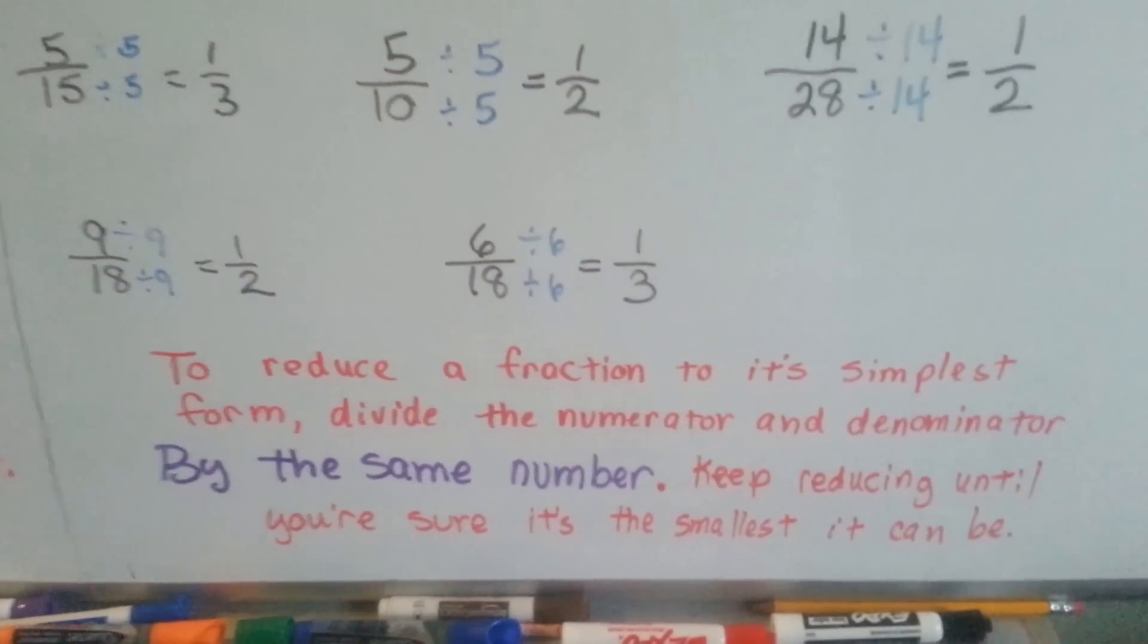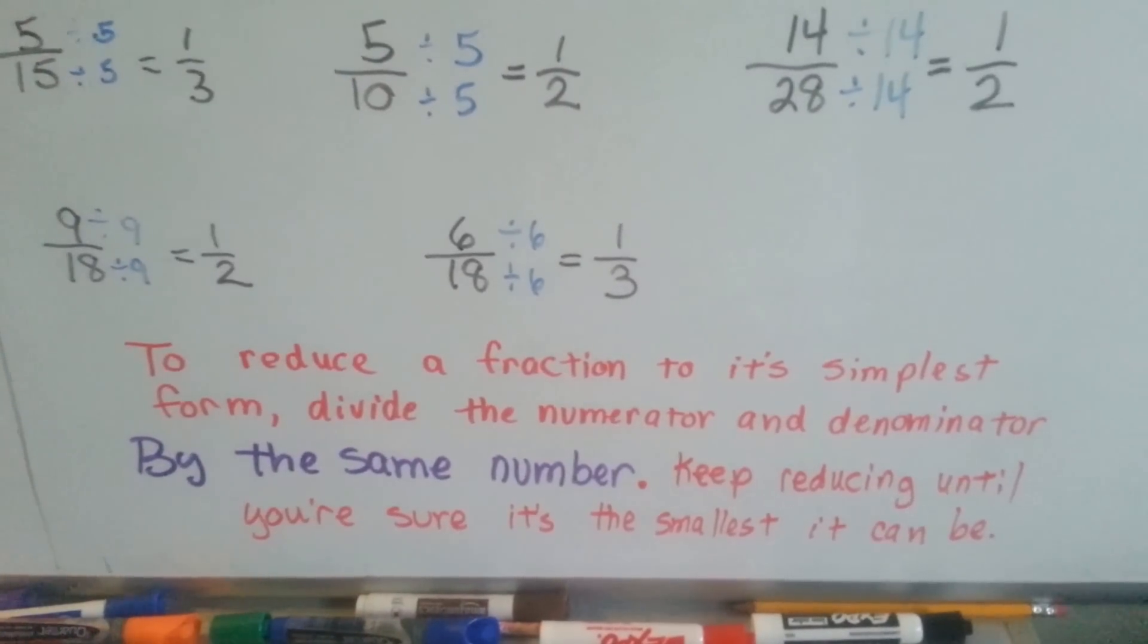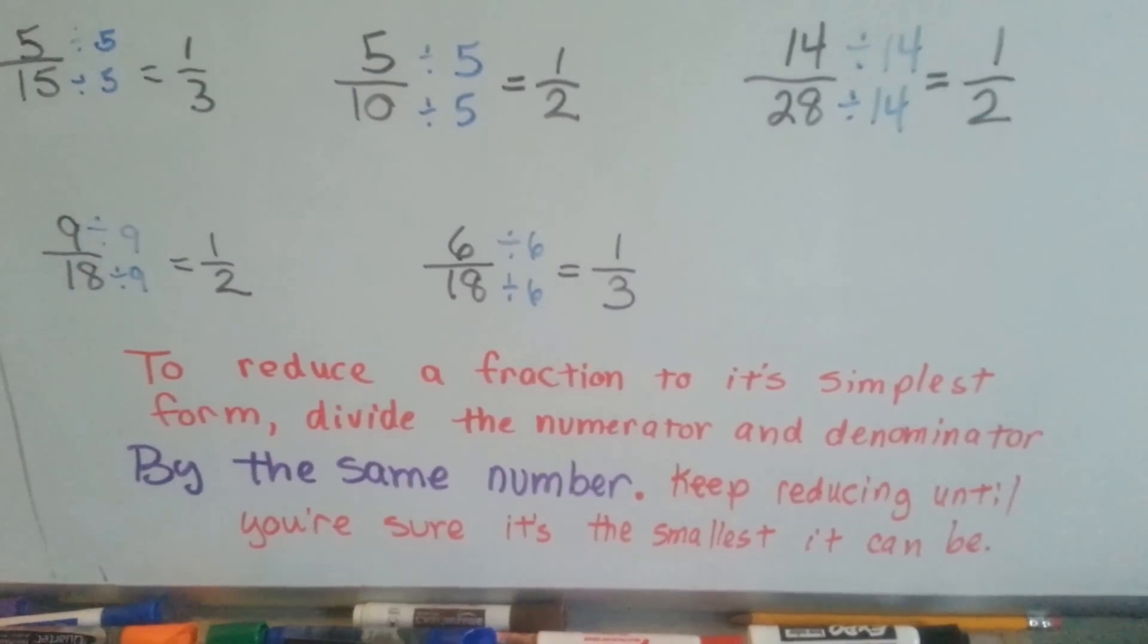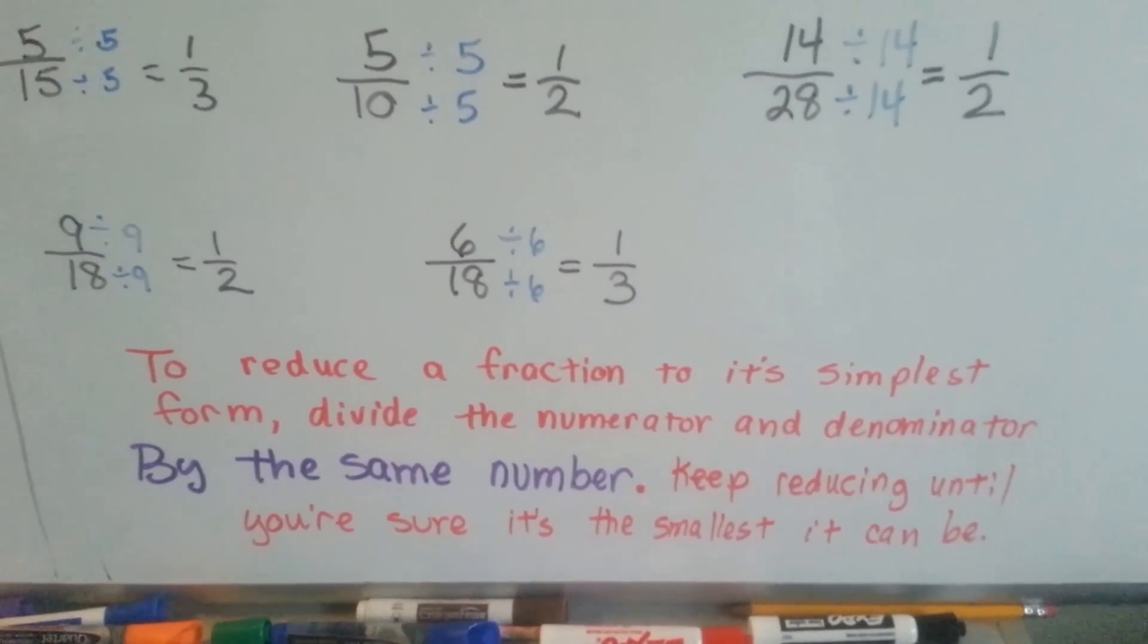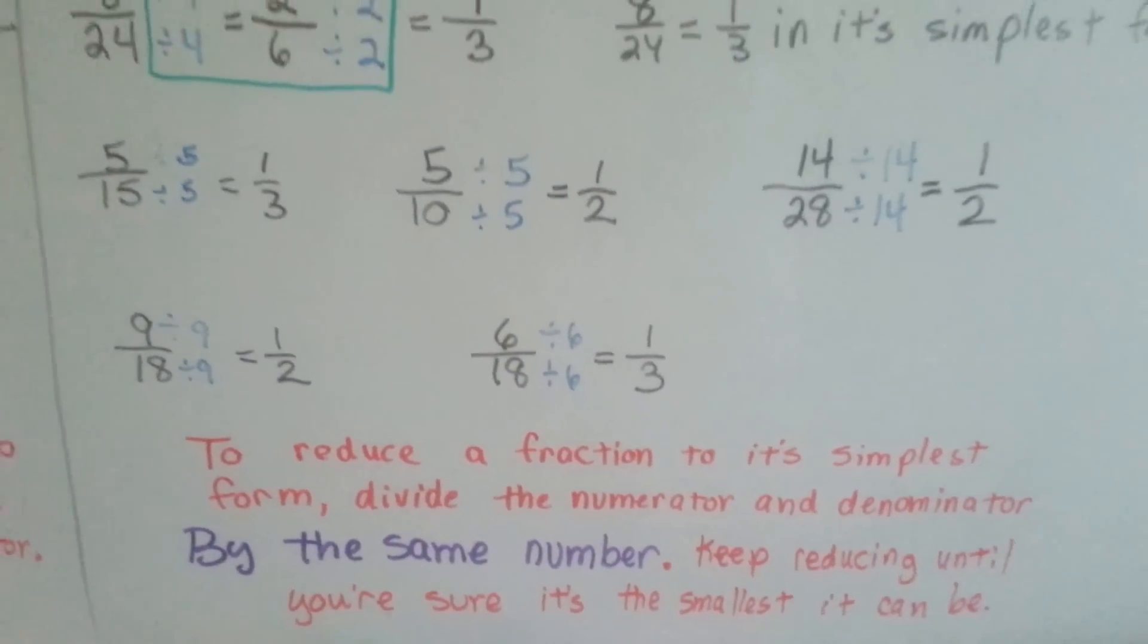So, to reduce a fraction to its simplest form, divide the numerator and denominator by the same number. Keep reducing until you know you're sure it's the smallest it can be.